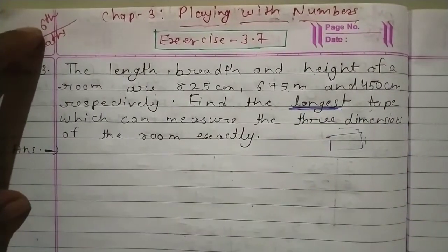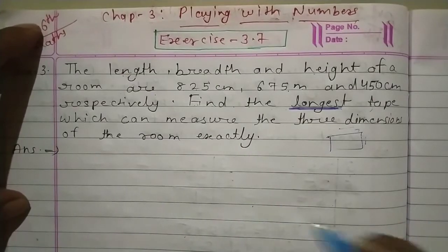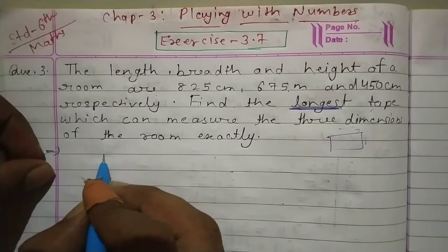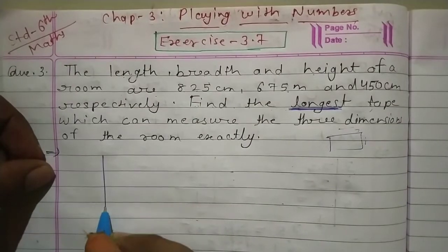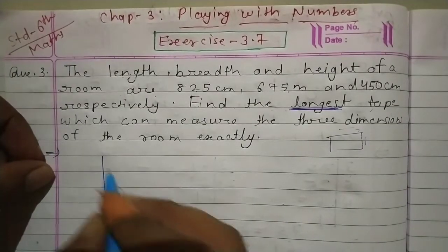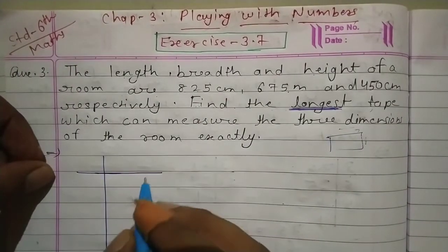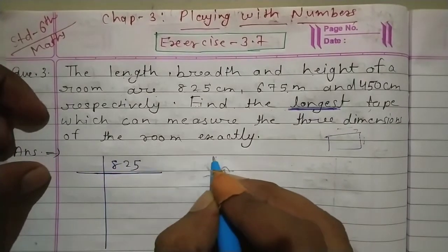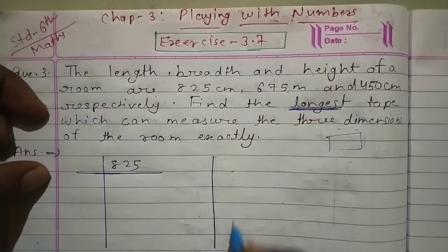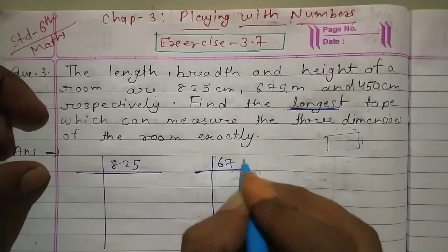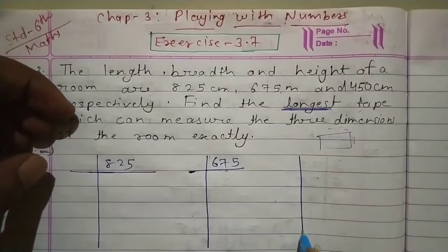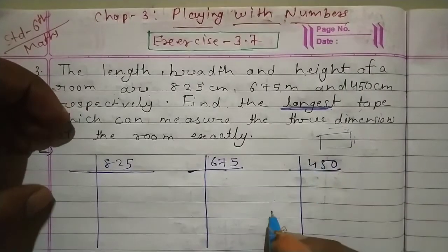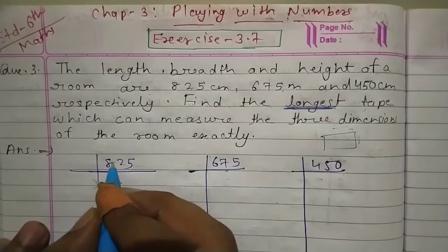हम यहाँ पे HCF find करने के लिए prime factorization का उपयोग करेंगे। अलग-अलग जो भी numbers दिये रहते हैं उनका prime factorization करना होता है। तो यहाँ पे 825, 675, और 450 का prime factorization find करेंगे।